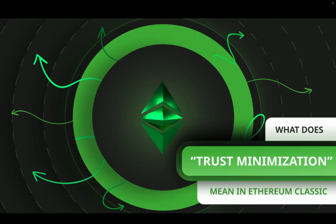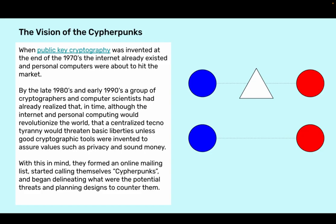What does trust minimization mean in Ethereum Classic? The vision of the cypherpunks. When public key cryptography was invented at the end of the 1970s, the internet already existed and personal computers were about to hit the market.